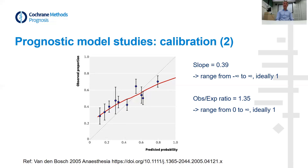Ideally, the OE ratio has a value of 1, meaning that the number of predicted and observed events are equal. However, it can take values ranging from 0 to infinity. Note that the total OE ratio gives only limited information about the overall calibration of the model, because there may also be groups of individuals in which the model does not underestimate the risk but even overestimates it. Therefore, it is preferred to present calibration in the form of a calibration plot and report the calibration slope with the confidence interval. The OE ratio is often easier to calculate and more often reported in prognostic model studies, and can therefore more often be used in a meta-analysis.